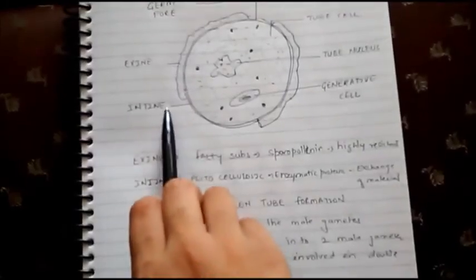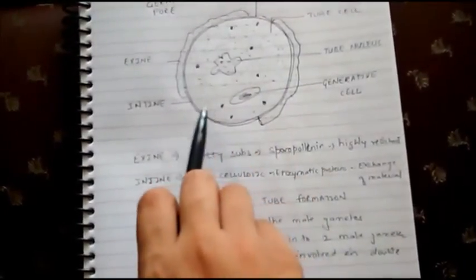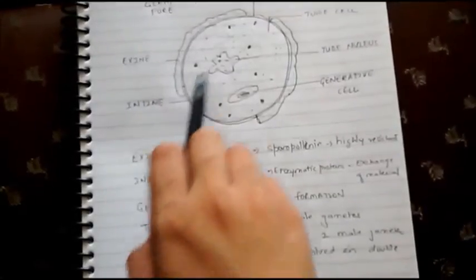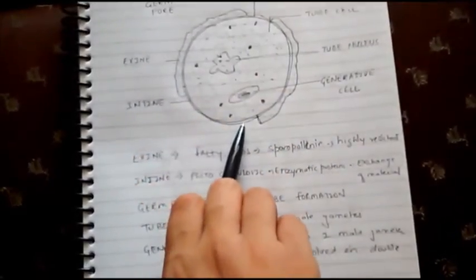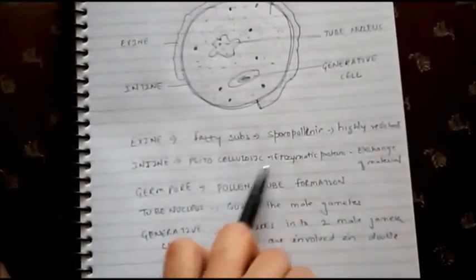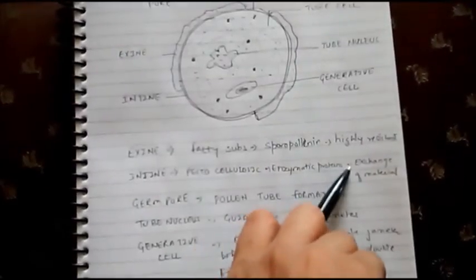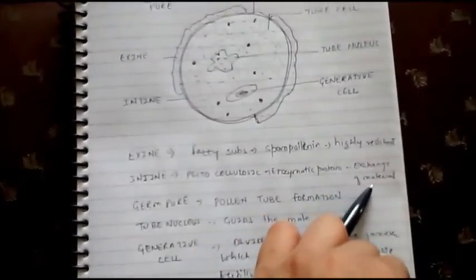The intine, which is the next layer of the pollen grain after exine, is smooth in nature and is pectocellulosic. It contains many enzymatic proteins which are responsible for exchange of material.